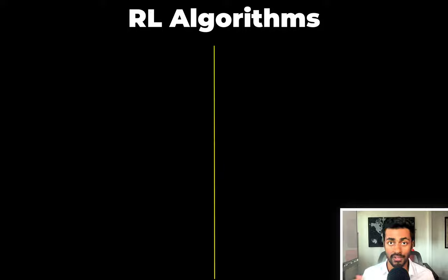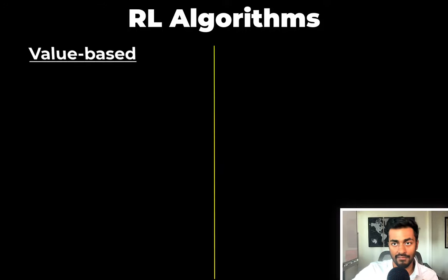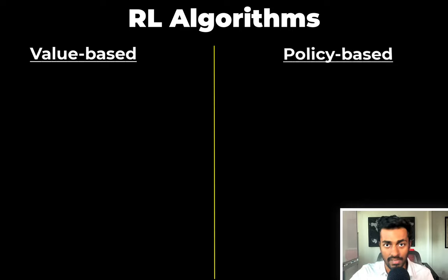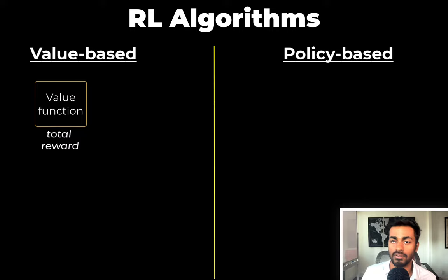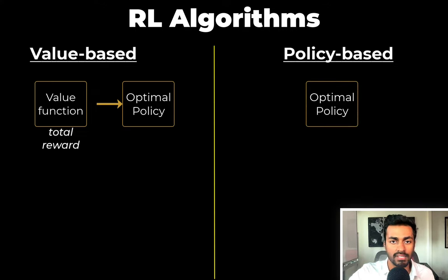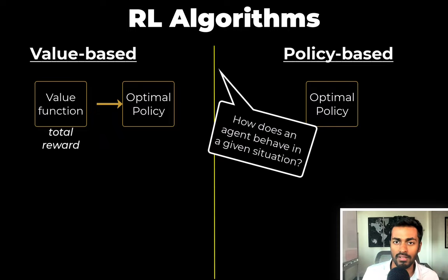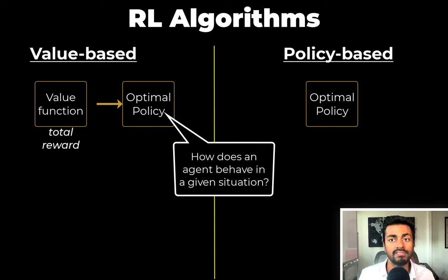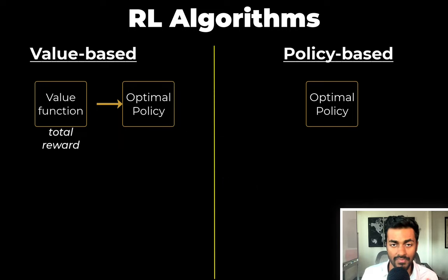Now we can break reinforcement learning algorithms down into two types, that is the value-based methods and the policy-based methods. Remember, at the end of the day, we're trying to maximize total reward. So value-based methods will determine a value function that quantifies this total reward. And using this value function, it'll determine the optimal policy. Policy-based methods will determine an optimal policy directly. And optimal policy is the policy that maximizes the total reward. And just to note that policy is how an agent behaves in a given situation or state.